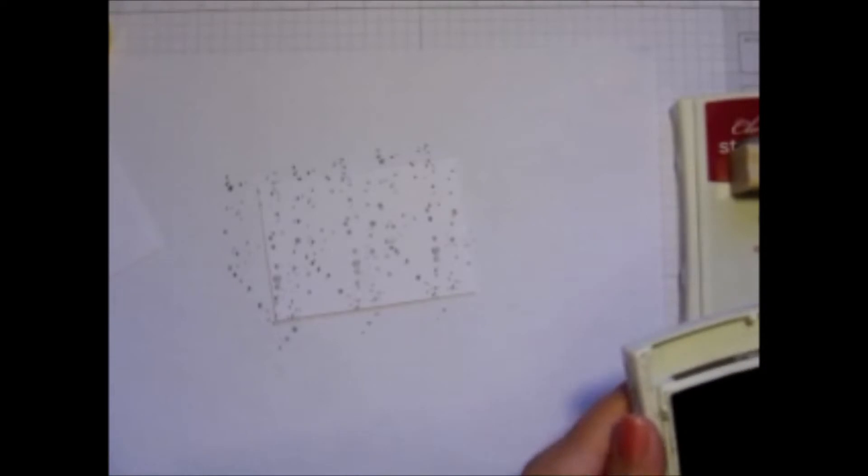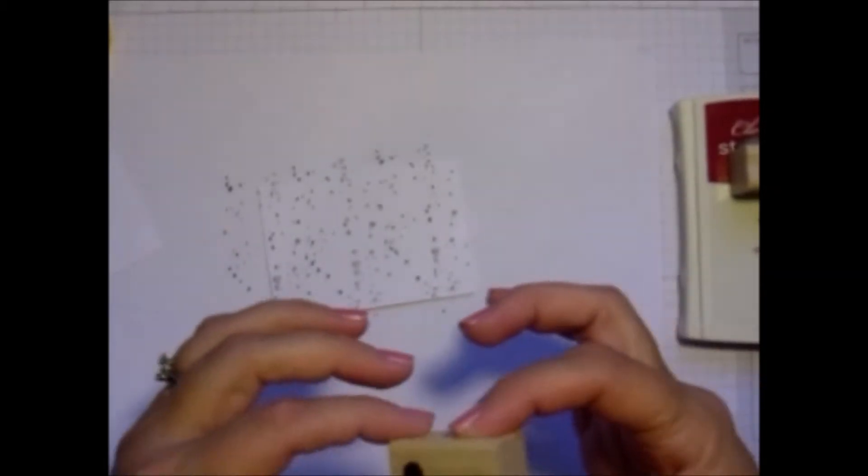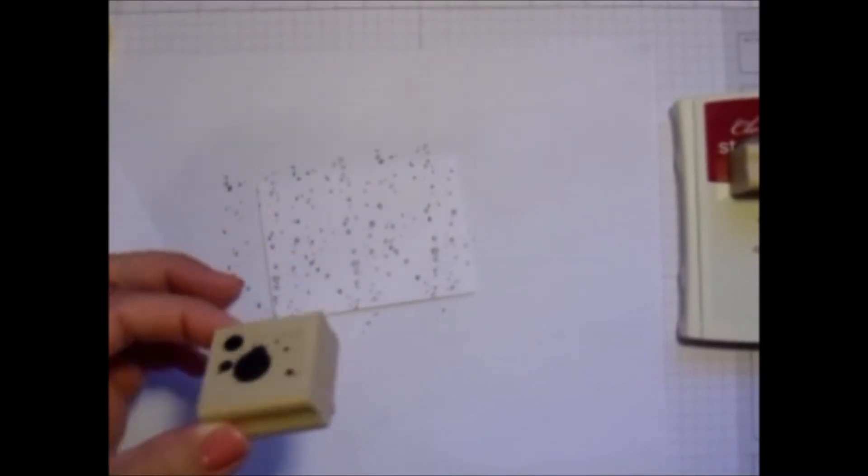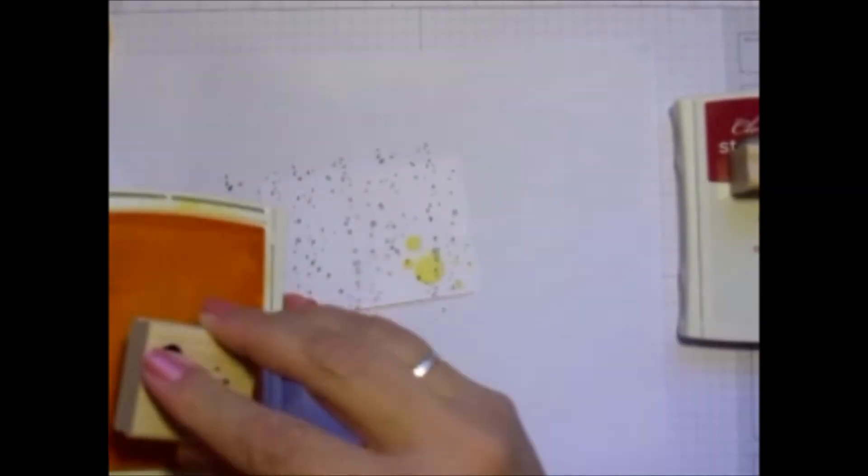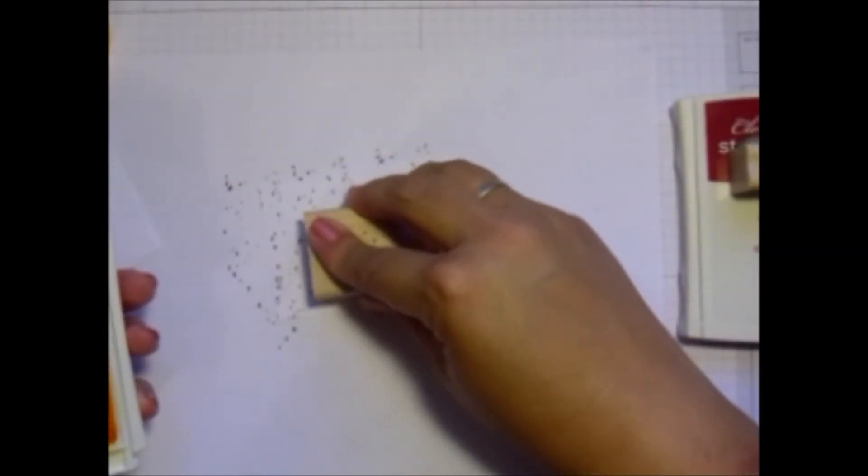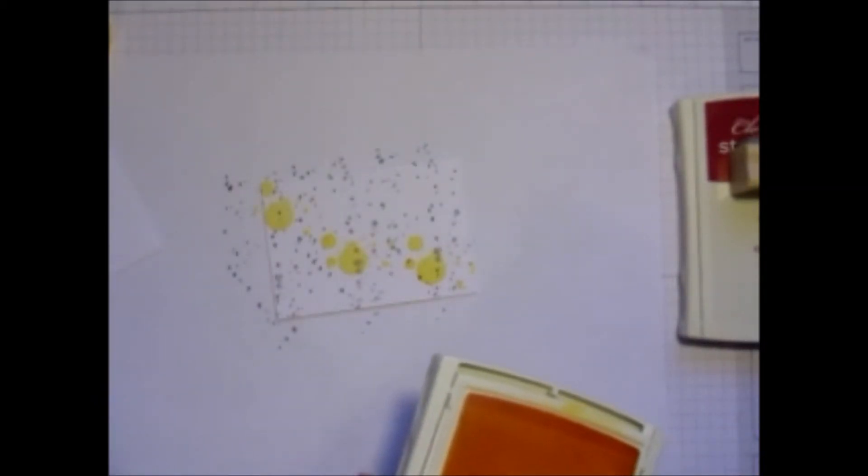Alrighty, then the next one I'm going to do is the smaller but larger ink splat in Daffodil Delight. So let's go ahead and ink up that stamp. Just randomly stamp. Looking good so far.